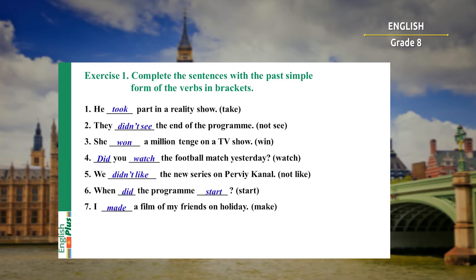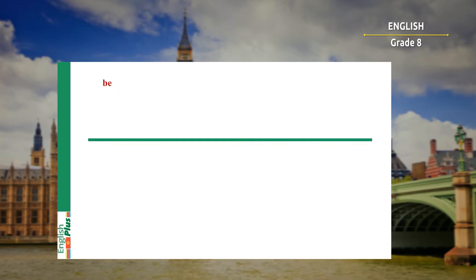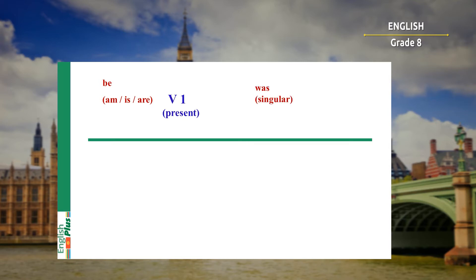Well done! Now let's look at verb 'to be'. We know that forms 'am', 'is', 'are' are the first form of the verb, and we use them when we speak about the present. 'Was' for singular and 'were' for plural are the second form of the verb 'be', and we use 'was' and 'were' to speak about the past.